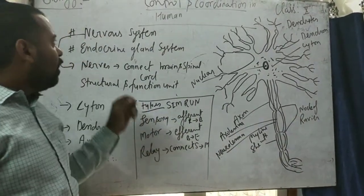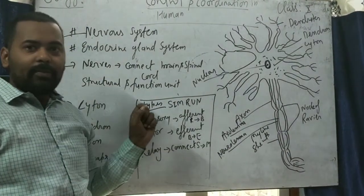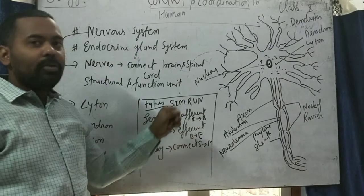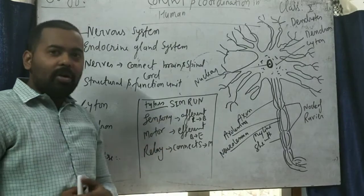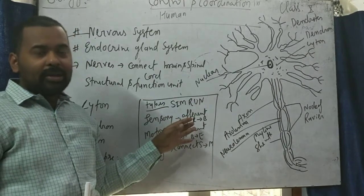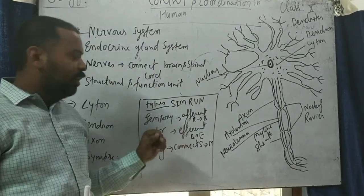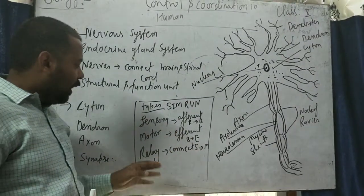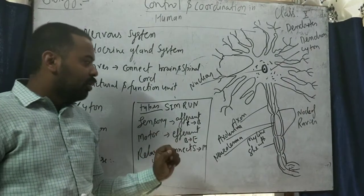If we talk about types of neurons, there are three types. To remember them, I have a keyword: S-M-R. S for sensory, M for motor, and R for relay neuron. Sensory neurons are also known as afferent neurons because they receive impulses from receptor organs and send these impulses to the brain. Motor neurons are also called efferent neurons — they send impulses from the brain to the effector organ. The last one is the relay neuron, which connects the sensory neuron to the motor neuron.